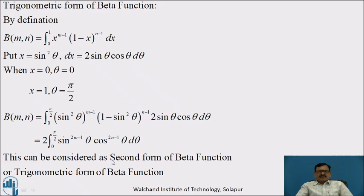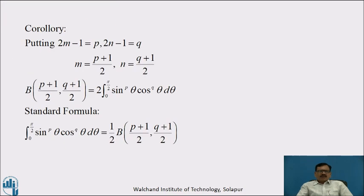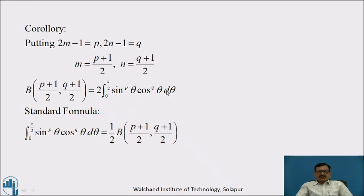This is the second form or trigonometric form of Beta Function. To simplify the formula, put 2m-1 equal to p and 2n-1 equal to q. Solving for m gives m equal to (p+1)/2, and n equal to (q+1)/2. Therefore, Beta((p+1)/2, (q+1)/2) is equal to twice the integral from 0 to π/2 of sin raised to p θ · cos raised to q θ dθ.